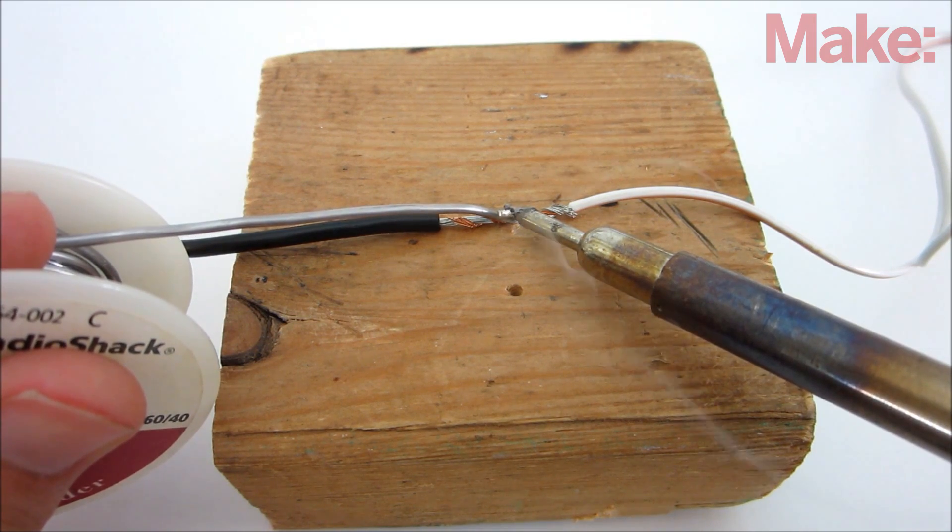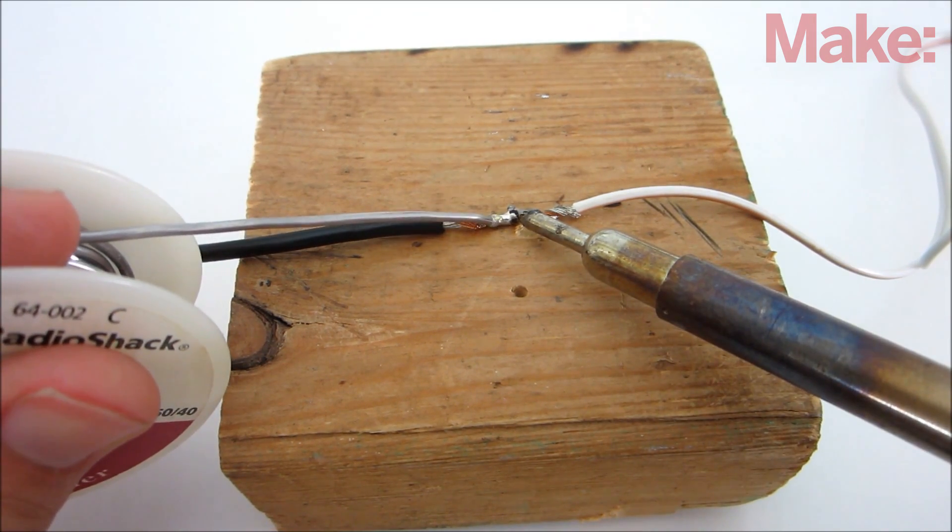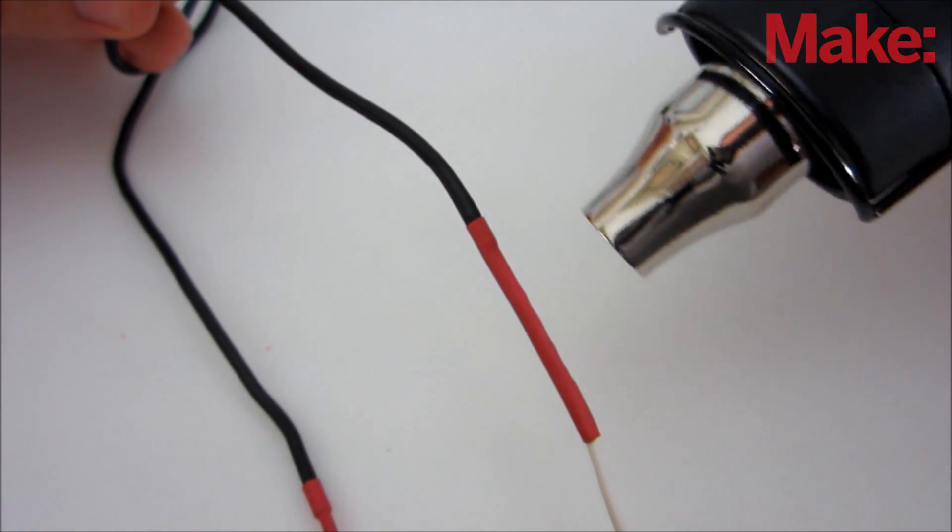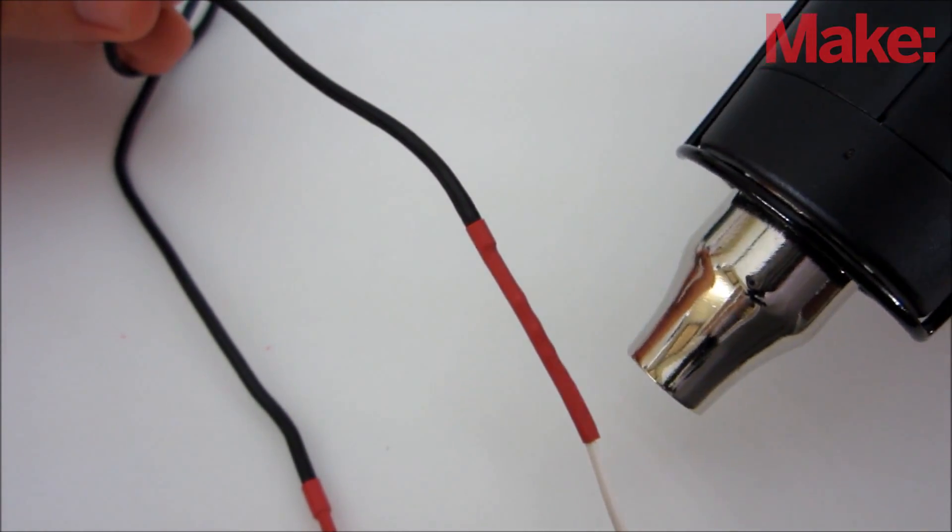Once you've found an adapter that works, you can go ahead and solder it to the sprinkler valve. Because you'll be working around water, I highly recommend insulating the connections with either heat shrink tubing or liquid electrical tape.